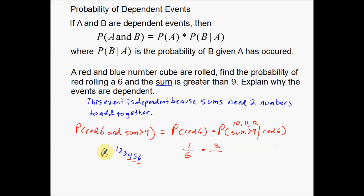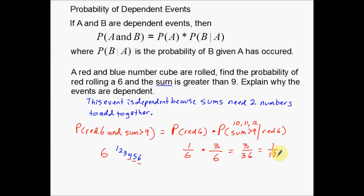There are three such events — six-four, six-five, six-six — out of a total of six possible outcomes: six-one, six-two, six-three, six-four, six-five, six-six. Sometimes you may need to write out these numbers to figure out your totals. Multiplying the probabilities together gives us one-sixth times three-sixths, which is three out of 36, reducing down to one-twelfth.